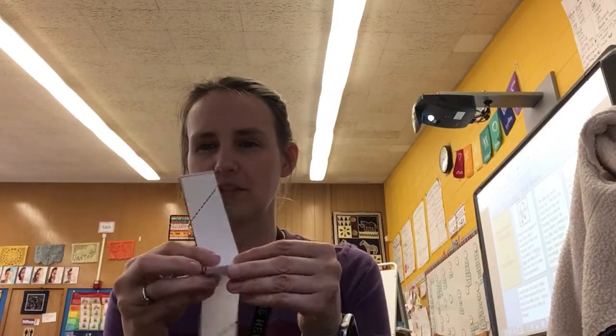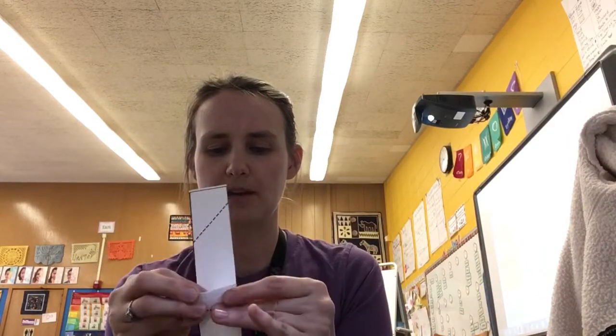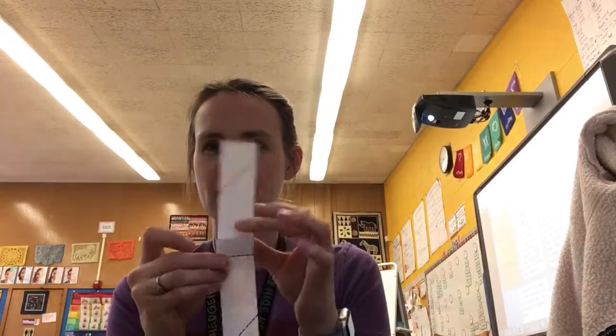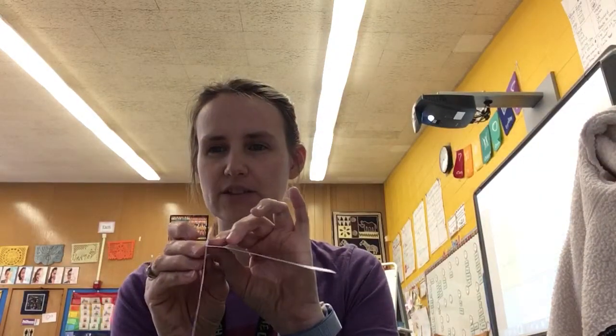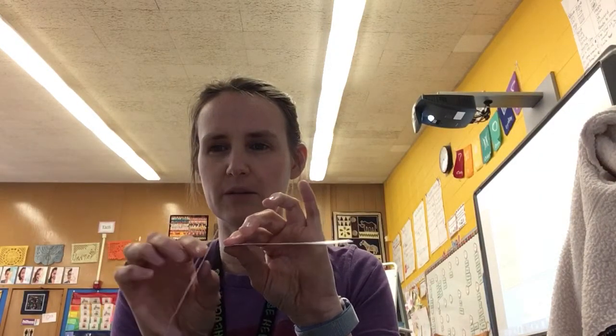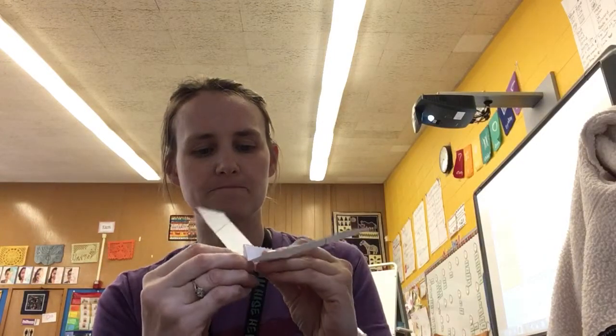Then I'm going to fold going in this direction, so that this fold folds the other direction. I'm not folding the same way, I'm folding back the other direction from the first crease that we made. Now I'm going to do the same thing on the other side, so I have like a little mountain in the middle.